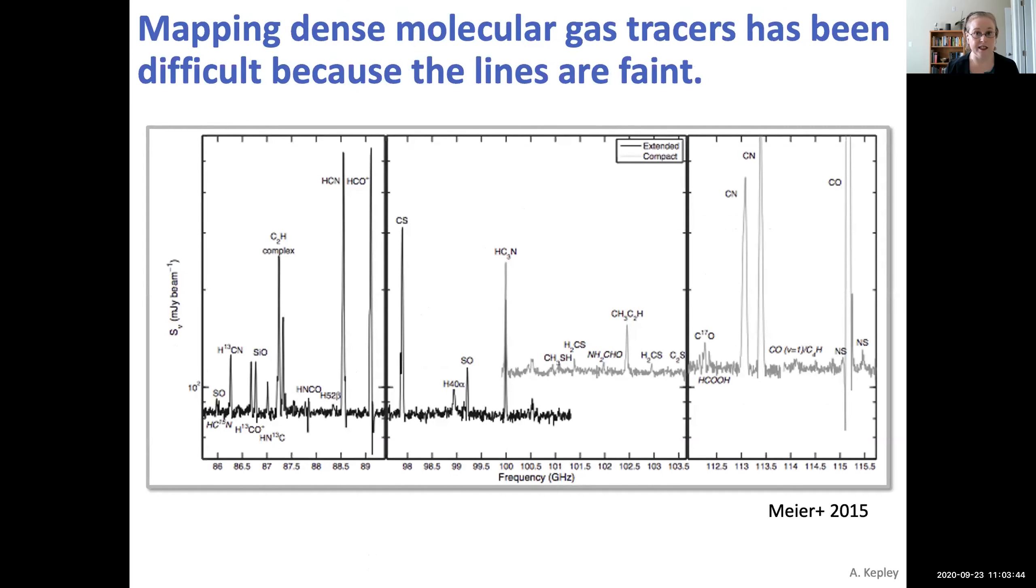So traditionally, this has been hard to do. Here's an image from Meyer 2015, showing a lovely ALMA spectrum of NGC 253. You can see that the CO is wampin, it's off the top of the plot. And here are the usual tracers of choice for dense molecular gas, HCN and HCO+. And they're down 10 to 30 times fainter than CO.